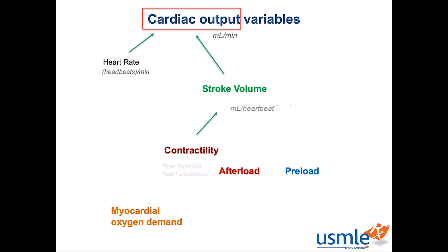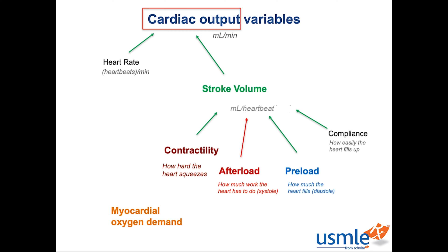Stroke volume, in turn, is determined by contractility — or how hard the heart squeezes — preload, or how much the heart fills during diastole, afterload, or how much work the heart has to do during systolic ejection, and another one not mentioned in First Aid called compliance, or how easy it is to fill the heart. Increased contractility, preload, and compliance all tend to increase stroke volume, whereas increased afterload tends to decrease stroke volume. Now how exactly these four variables define the stroke volume is a lot more complex than simply direct or inverse proportionality, and the relationship between them is beautifully represented by one of my favorite diagrams — the pressure-volume loop. Definitely check out that video after this, because knowing how these interact is a lot higher yield than simply knowing the definitions.